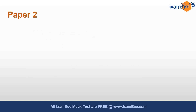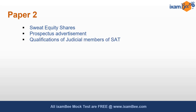The questions in Paper 2 were direct but the options were very near and confusing, making them relatively difficult. If you had bare act understanding and bare act reading, and would have practiced a lot of applied questions, you'd have done better. Some of the topics from which questions came include: sweat equity shares, advertisement of the prospectus, and qualifications of judicial members of SAT.